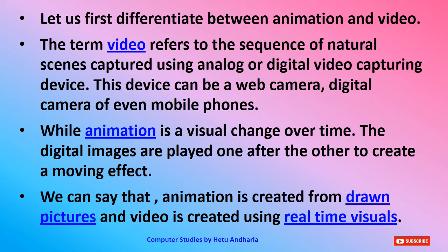Reading from the textbook: the term video refers to the sequence of natural scenes captured using an analog or digital video capturing device. This device can be a web camera, digital camera, or even a smartphone. Animation is a visual change over time — digital images are placed one after the other to create a moving effect. To animate a circle moving from one corner to another, you need to move it 24 times per second — that is, 24 frames per second — to give a smooth moving effect.